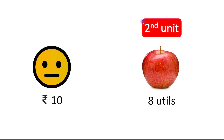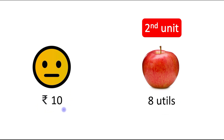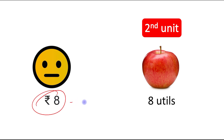When the consumer consumes the second unit of apple, he gets a satisfaction of 8 utils. Will he still be ready to pay rupees 10? Obviously not, because earlier he was getting 10 utils and now he is getting a lesser satisfaction of 8 utils. So he will only be ready to pay rupees 8.